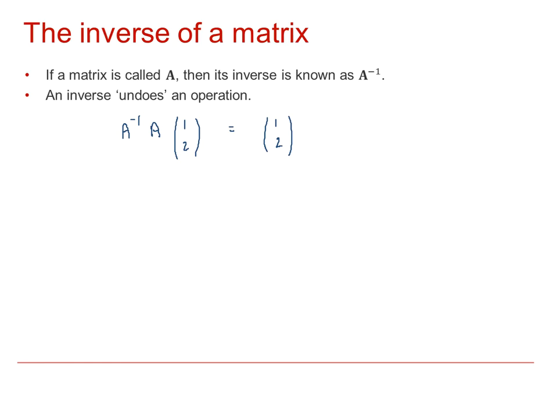This means that A inverse times A must be exactly the same as the identity, because we know that the identity matrix is exactly the same. So, we can say that A inverse A must be equal to the identity matrix, which is (1, 0; 0, 1) for 2x2 matrices.